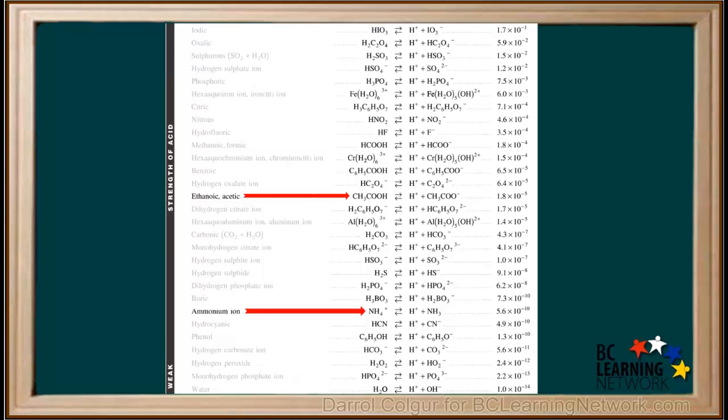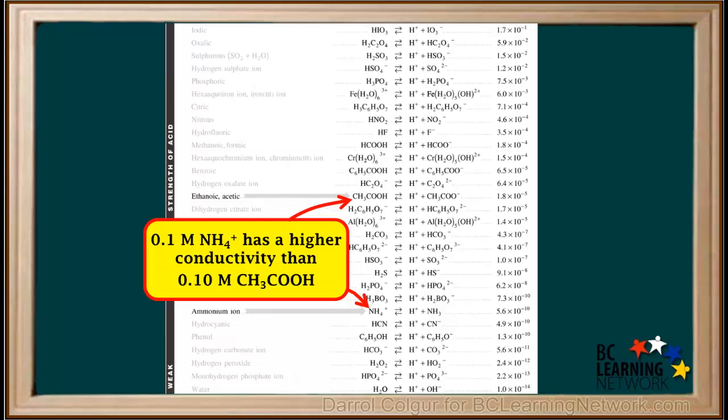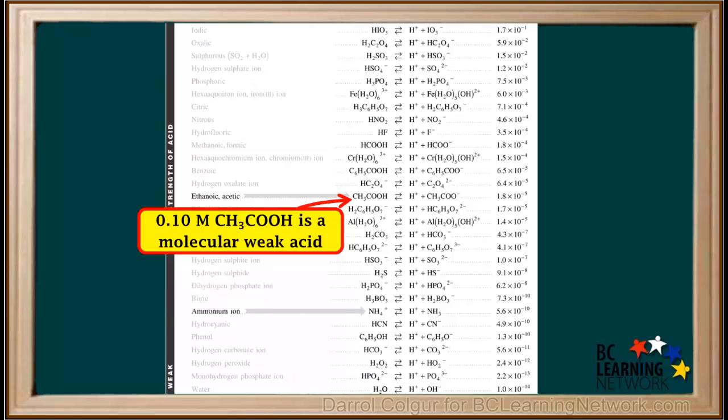So if we compare acetic acid with the ammonium ion, we see that NH4+ is a much weaker acid than CH3COOH. However, 0.1 molar NH4+ would have a higher conductivity than CH3COOH. This is because CH3COOH is a molecular weak acid. The only ions it produces in solution come from its limited ionization as a weak acid. Because 0.1 molar CH3COOH has few ions, it is a poor conductor or weak electrolyte.